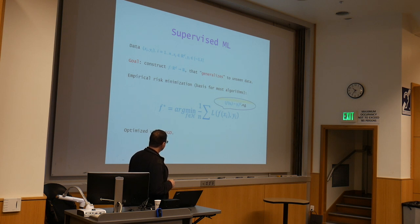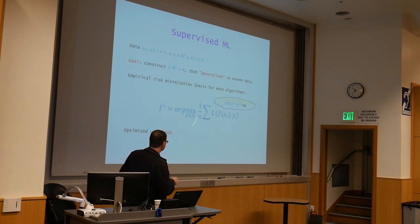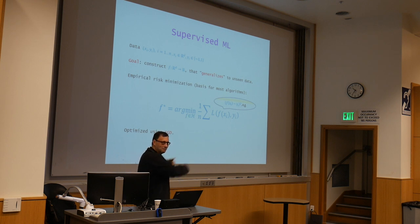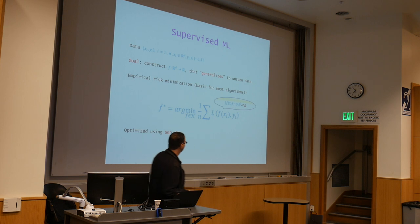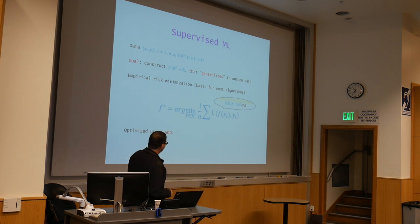That's kind of all of machine learning, right? F is some type of neural network. You plug this in and optimize.